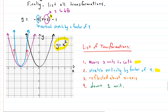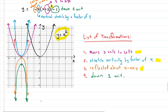One more thing — we have our vertical shifting. There is a minus one at the end, which means we go down one unit. We shift the graph down one and list that transformation: went down one unit. So we've now applied all four transformations.